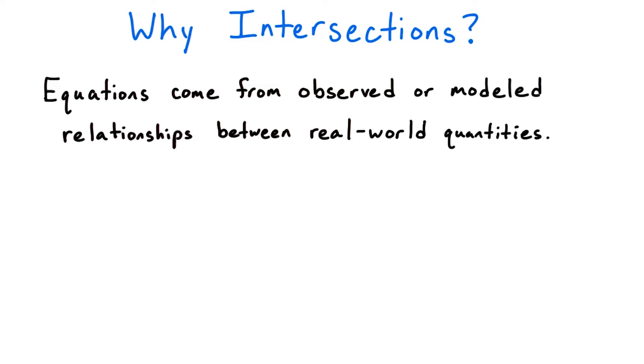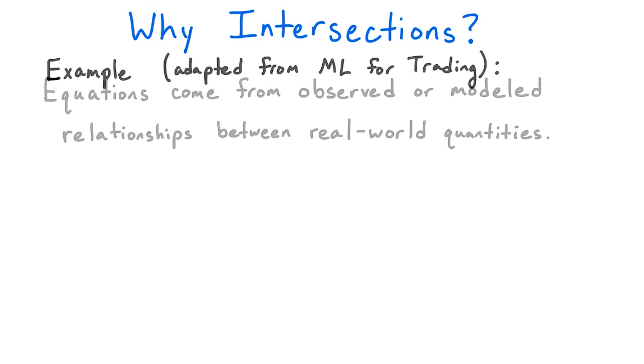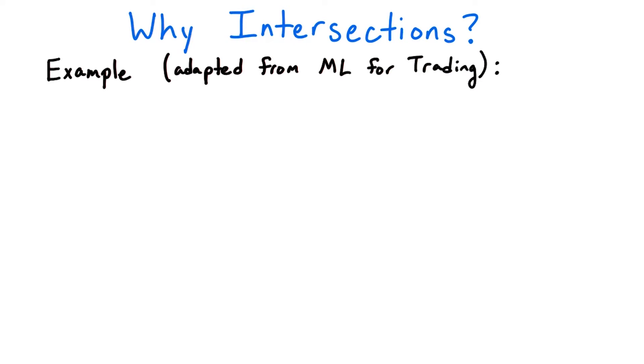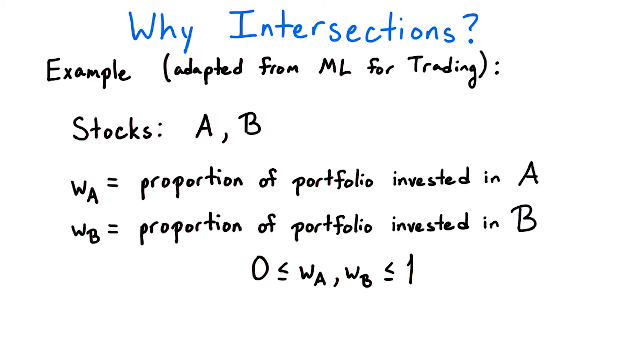In real-world situations, these equations typically come from observed or modeled relationships between quantities. Let's take a look at a modified example from machine learning for trading. Suppose I'm trading stocks and I have a choice of two stocks, A and B, that I can put into my portfolio.